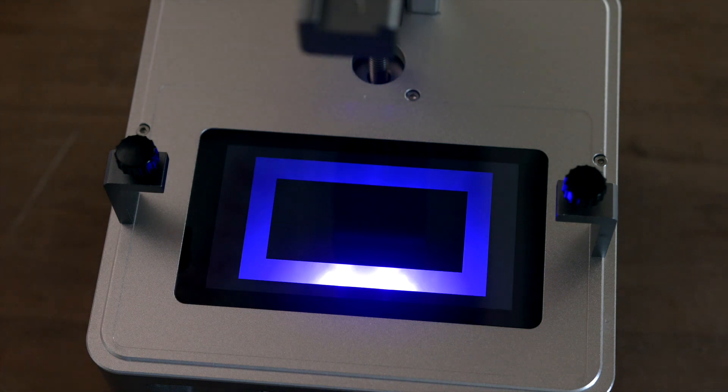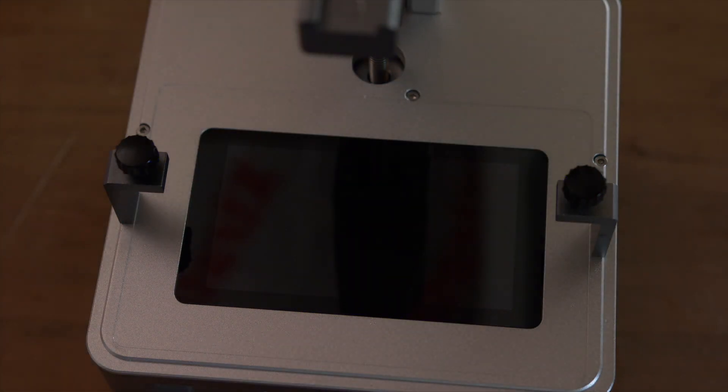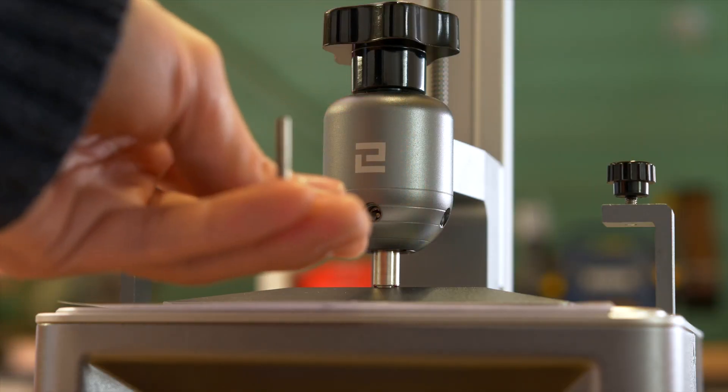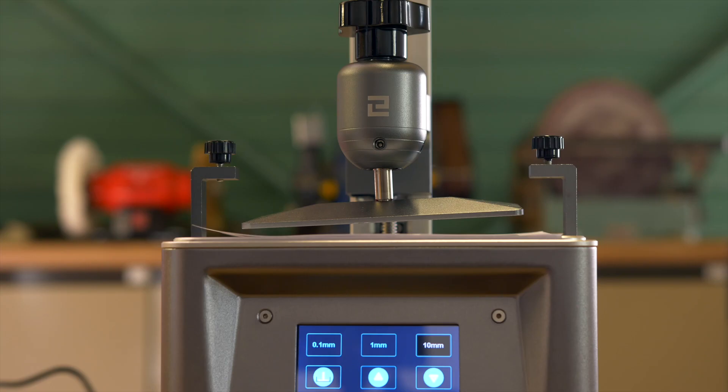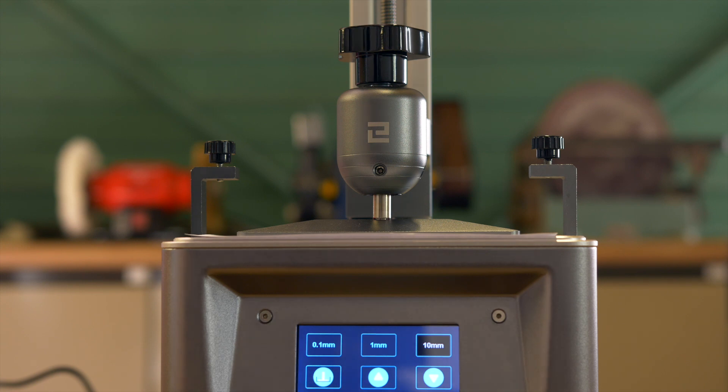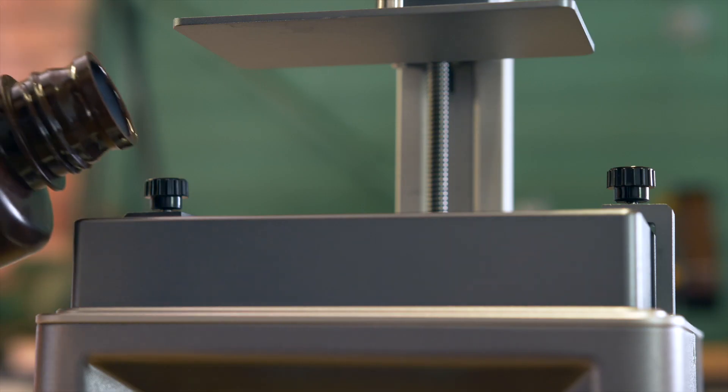This doesn't need doing often but it does need doing at least once. This involves undoing a screw, removing the vat, placing a piece of paper on the LCD and then the printer does the rest for you. This takes a few seconds and then you tighten up the screws. This process is a joy to perform and it far exceeded my expectations of what is required from such a budget machine.